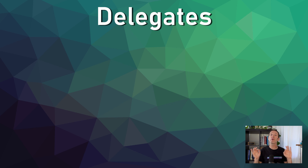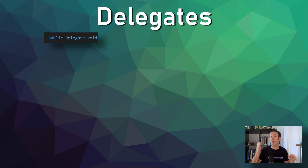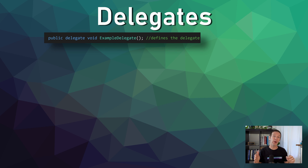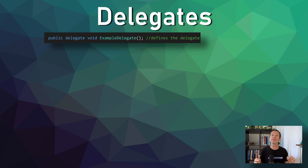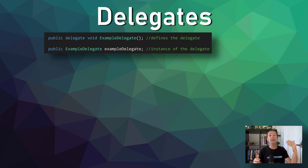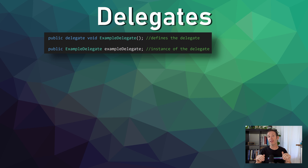To use delegates, we first must define the delegate itself. This is done by using the keyword 'delegate', defining a return type, giving the delegate a name, and finally choosing the input parameters, if any. We then need an instance of the delegate. These can be defined locally inside a function or, in this case, they are defined with a class-wide scope. It is this instance of the delegate that will be subscribed to and invoked, not the definition on the line above.